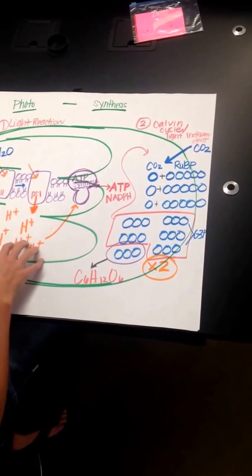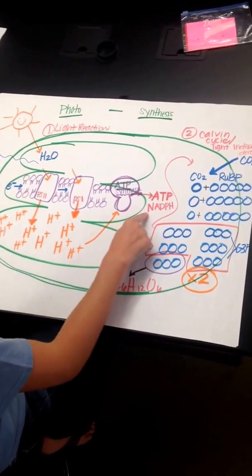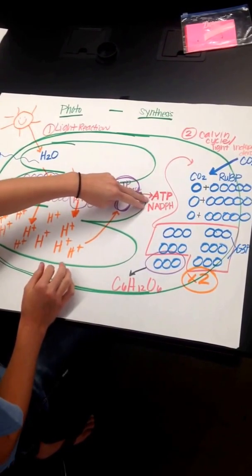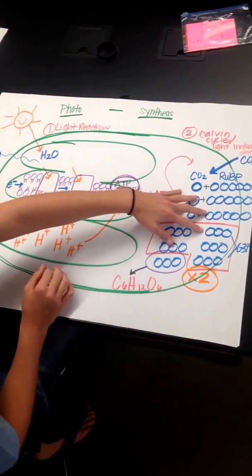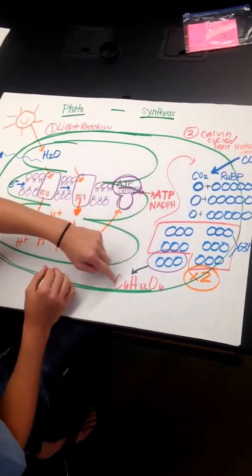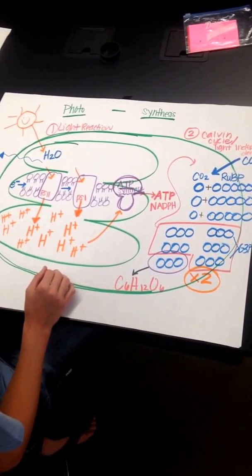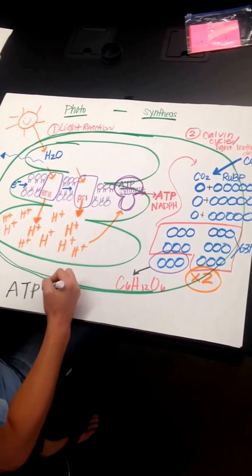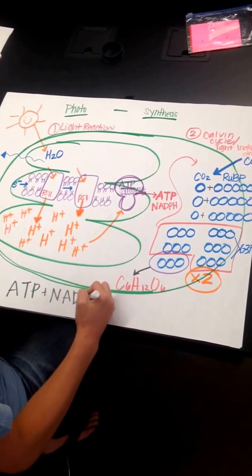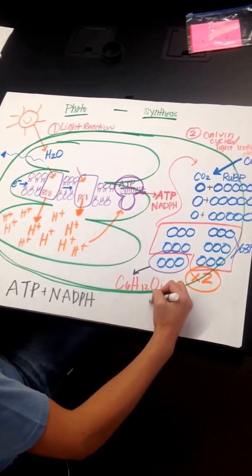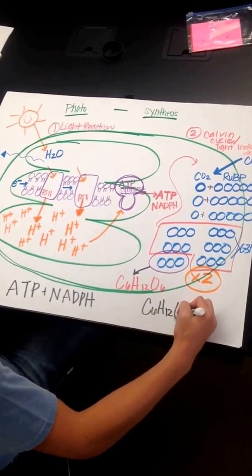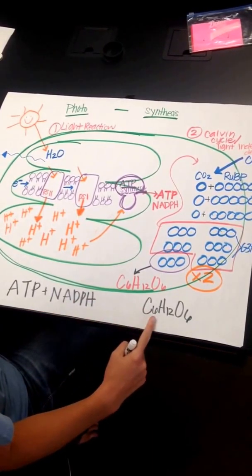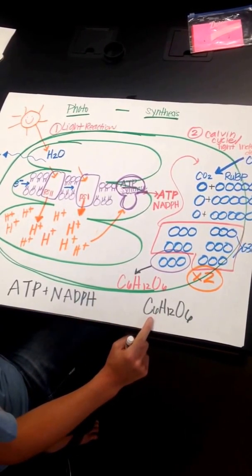So the light reaction made two really important molecules of energy. The light reaction took in solar energy and made cellular energy. Well, that cellular energy was used when CO2 came in to make one molecule of glucose. So the light reaction made ATP and NADPH, which were used to make glucose in the Calvin cycle. So the products of the light reaction were used as reactants for the Calvin cycle.